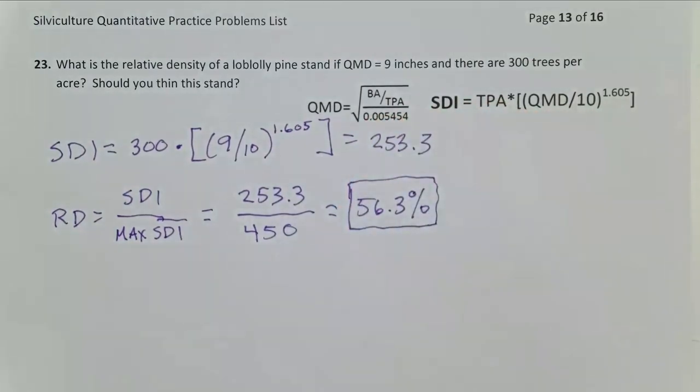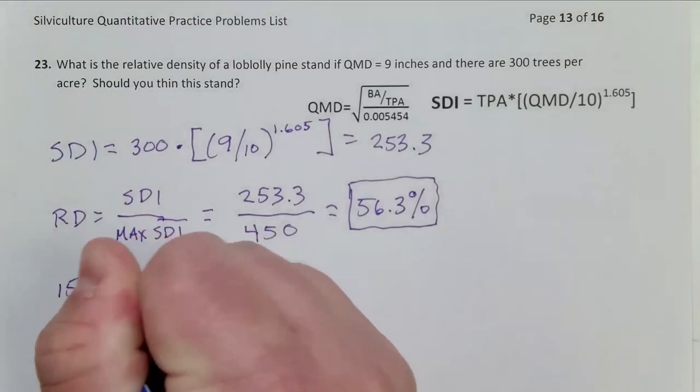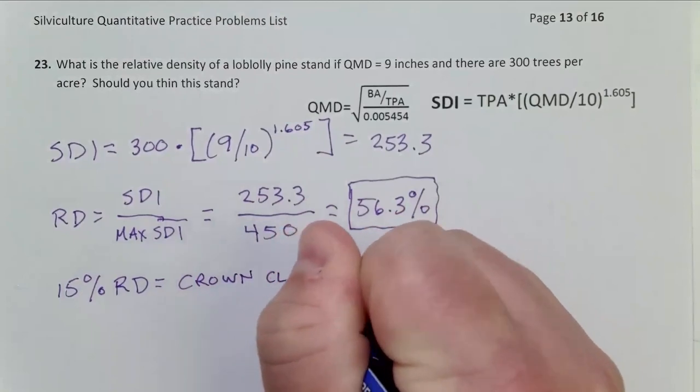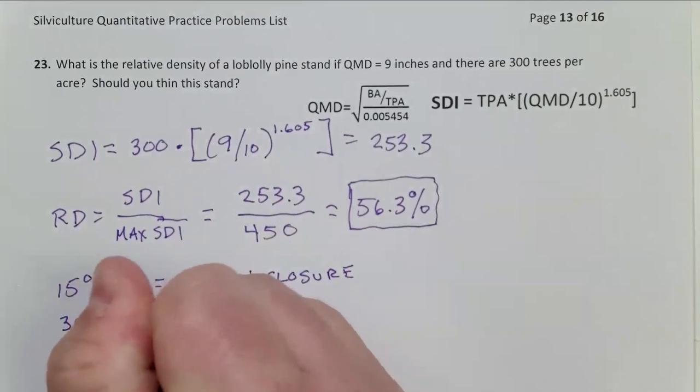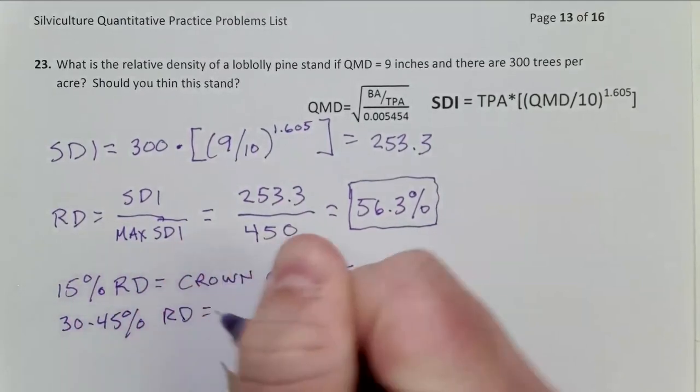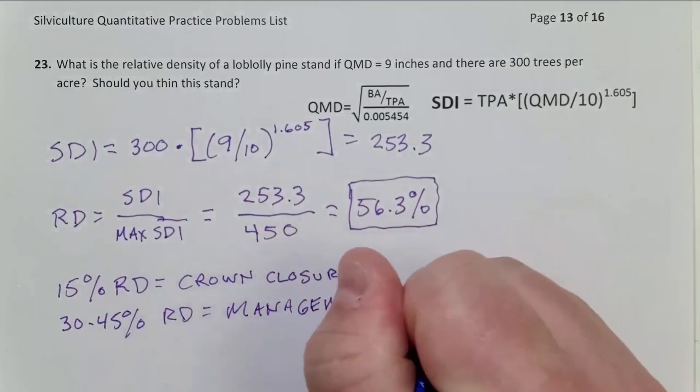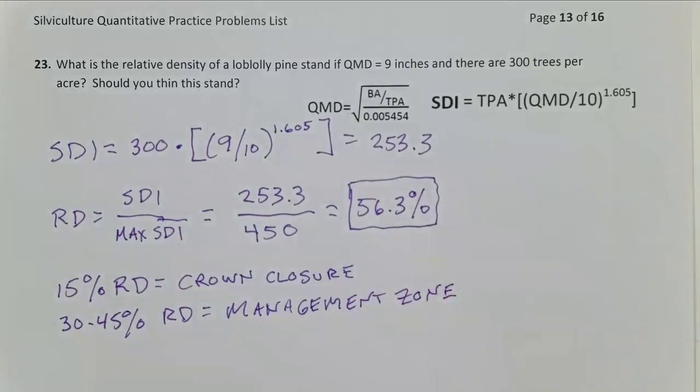We have to have one more thing memorized here. We need to have some relative density thresholds memorized. So remember, 15 percent relative density equals crown closure in a natural stand. It may come later in a plantation. 30 to 45 percent relative density, that's our management zone for southern yellow pines. That's ideal biologically. We may exceed it sometimes operationally.